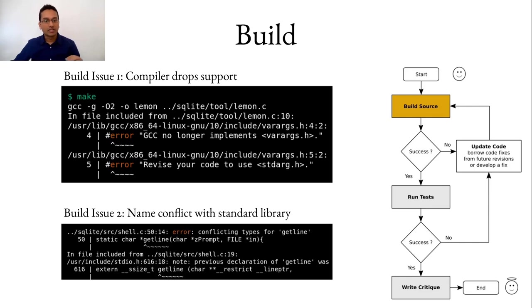The first issue is caused by compilers dropping support for certain header files and the second issue is caused by conflict in the identifier names used in the standard library and in the SQLite database engine. Both these changes were introduced after the release of the SQLite database engine 20 years ago.